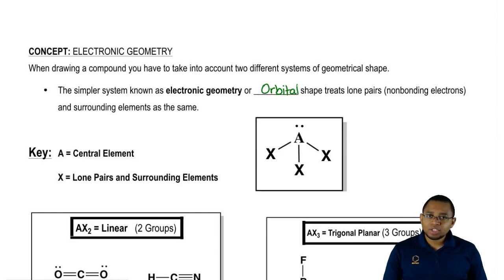What we need to realize about electronic geometry is it doesn't discriminate. It treats lone pairs and the surrounding elements around my central element as the same. Lone pairs and surrounding elements are both treated as X.